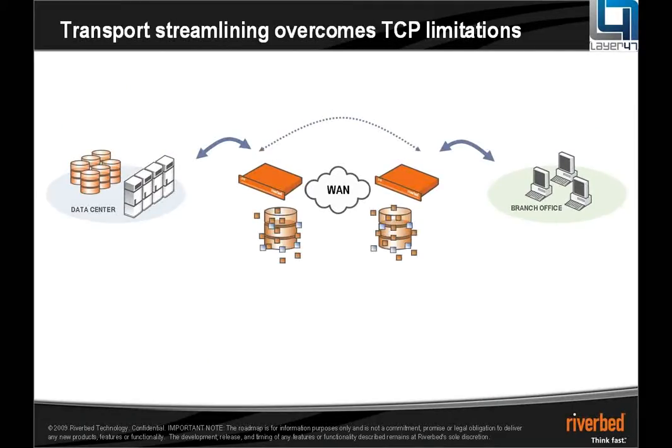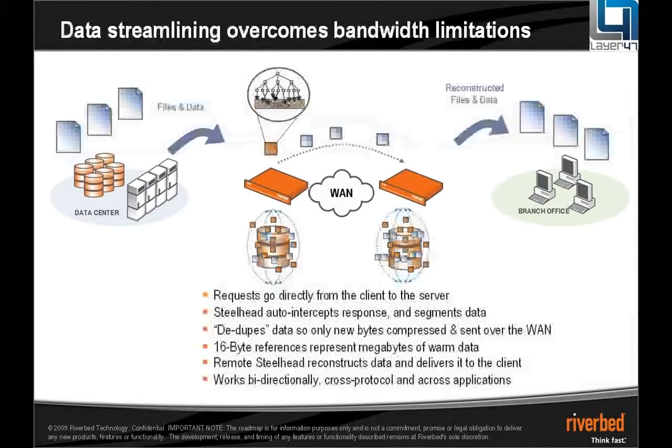Typically, you can expect these units to be installed and spend a couple of days learning a lot of data, after which the amount of new data they learn tails off significantly — because so much of what goes across the network is repeated in some form or another. You are very likely to see a 60% up to 95% reduction in TCP traffic sent across the network as a result of this.